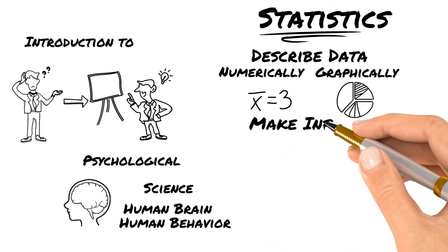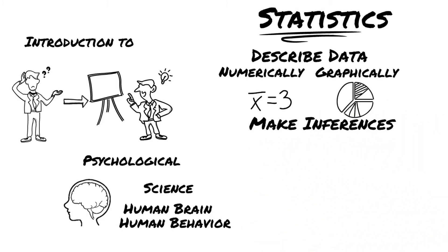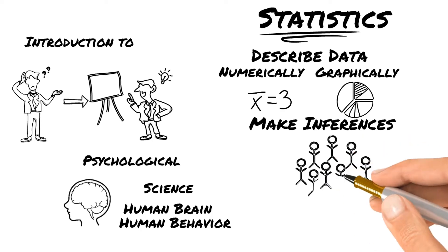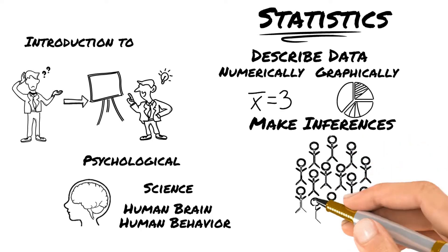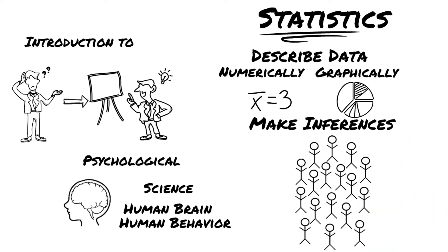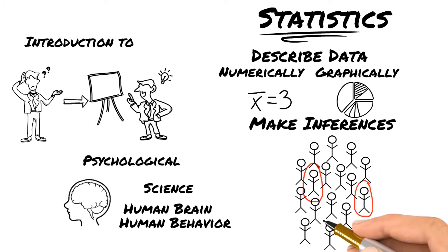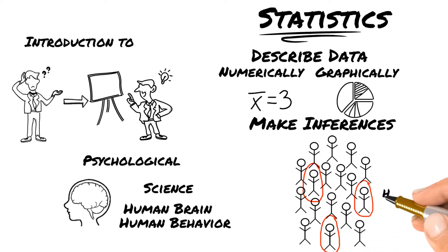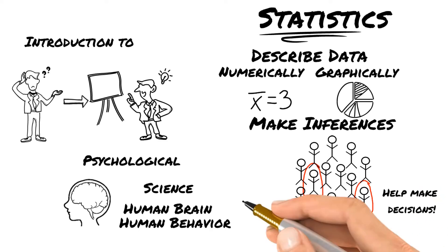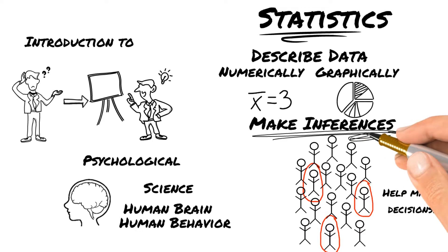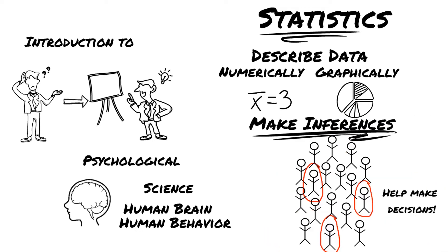The biggest thing we're going to do in statistics is make inferences. Say we have a large population — everyone in the United States — but we don't have the time or money to survey everyone. So we select a random sample and use statistics to help us make decisions about the whole population based on that small sample.